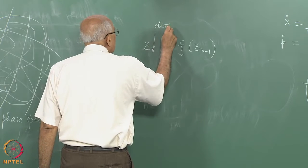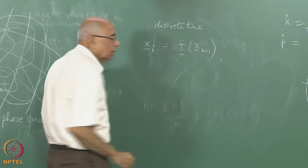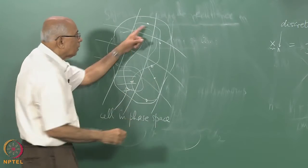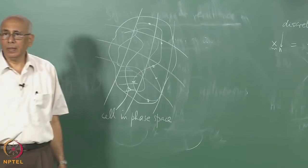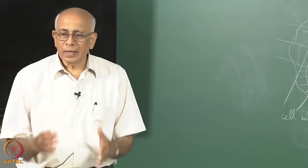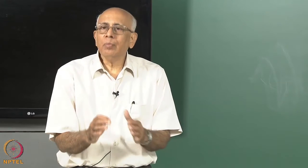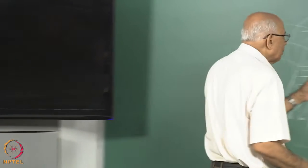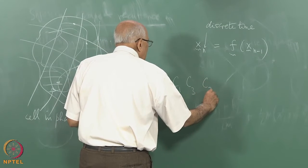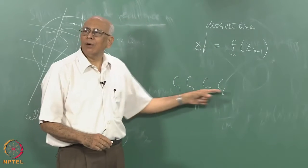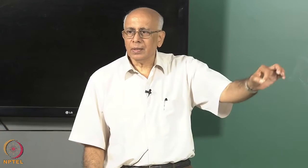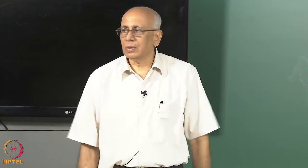Instead of following the continuous trajectory, I follow the points at discrete time steps and ask which cell each point is in. I have essentially replaced a continuous trajectory by a symbolic dynamics: my point starts in some cell c₁, jumps to cell c₃, then c₇, then c₆, and so on — giving a string of letters following a typical trajectory saying which cell it is in at each step. The question is what is the mean time it takes to come back to the original cell where it started.